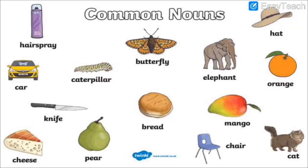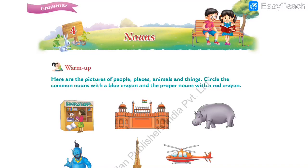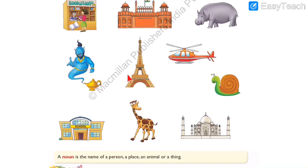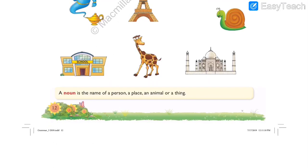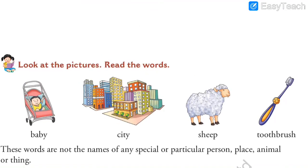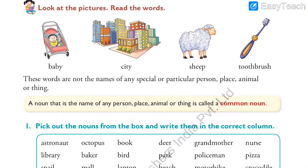After that, we had seen examples of common nouns: butterfly, caterpillar, elephant, bread, cheese, cat, mango — all are examples of common nouns. We had also done the warm-up exercise from the textbook, where we had to circle the common nouns with blue color and proper nouns with red color. The definition of noun we had seen: a noun is the name of a person, place, animal, or thing. Now let us move ahead. These pictures are common nouns — baby, city, ship, toothbrush — all common nouns.